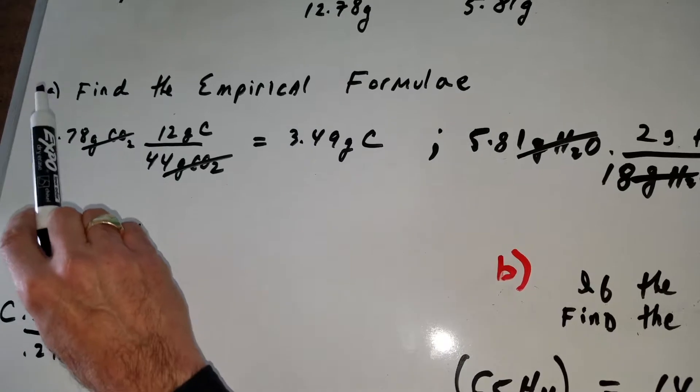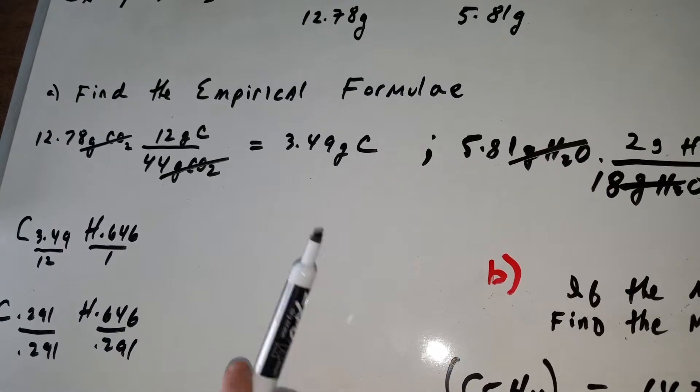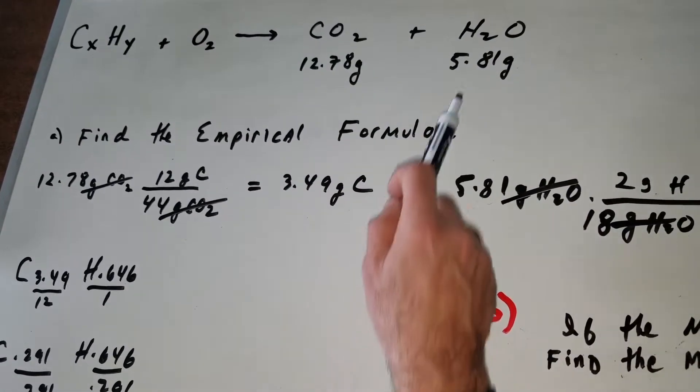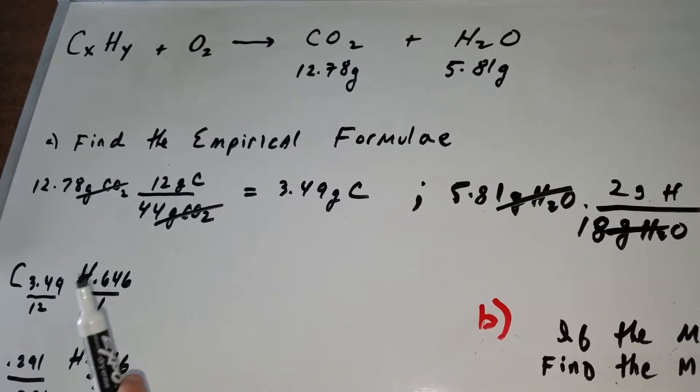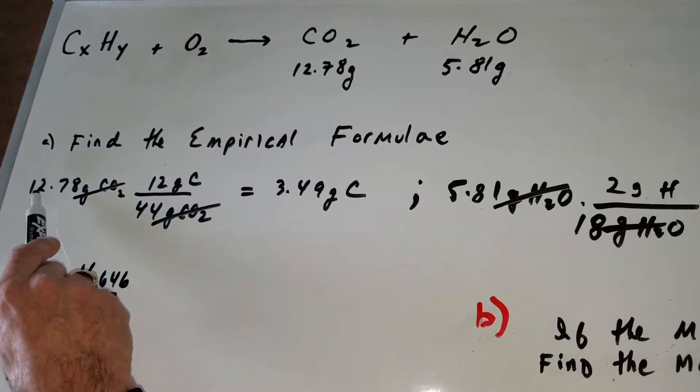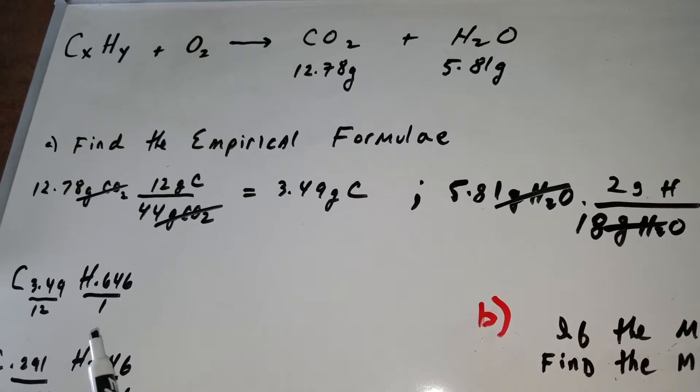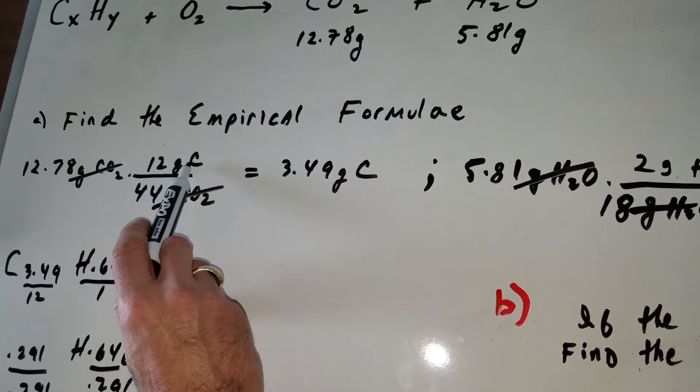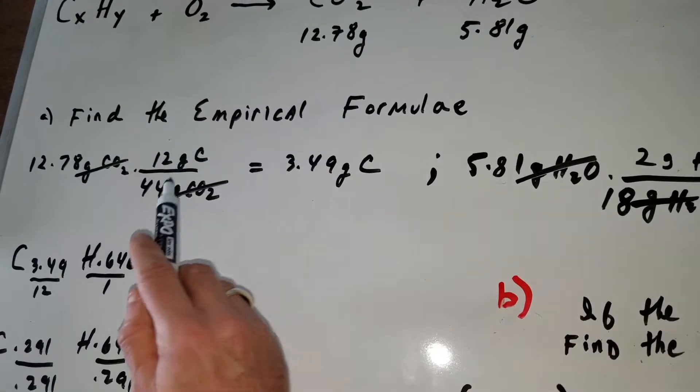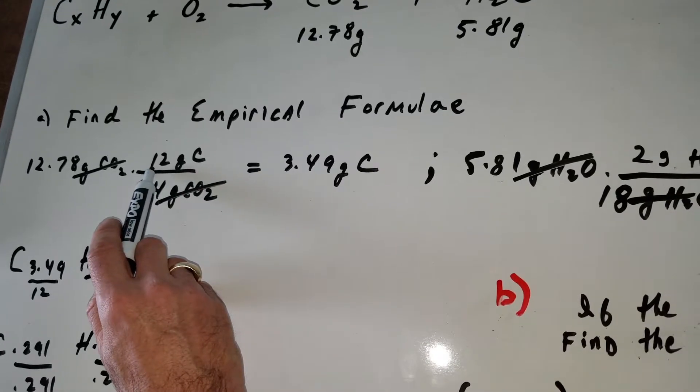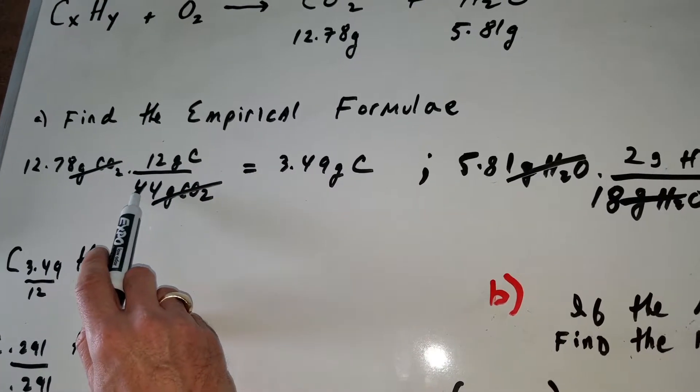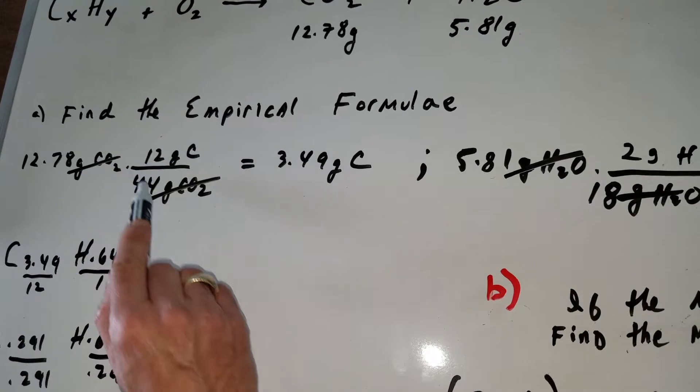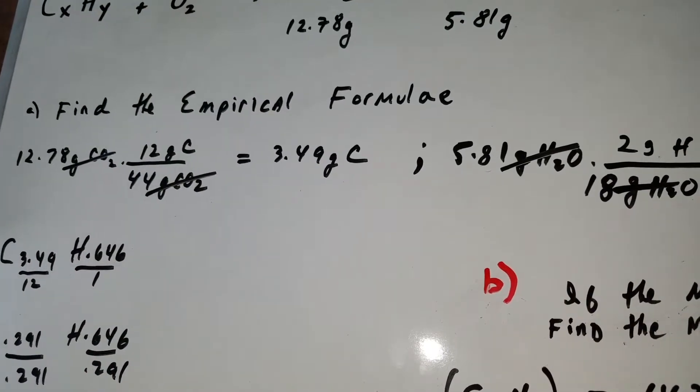We need to find the grams of carbon and the grams of hydrogen. All the grams of carbon are going to be in the CO2. I want to show you a nice little trick. I'm going to write down 12.78 grams of CO2 and use a very clever conversion factor. There is 12 grams of carbon in a mole of CO2. So there's 12 grams of carbon for every 44 grams of CO2. Since that is correct, these cancel out and that automatically gives me the grams of carbon.